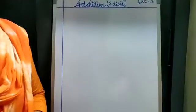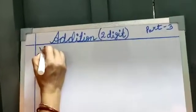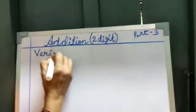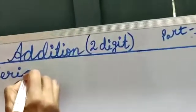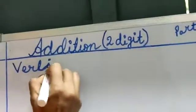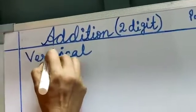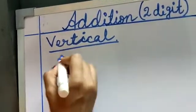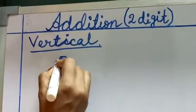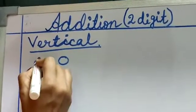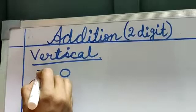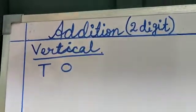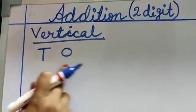So, let us start our chapter two digit addition. So, two digit addition, we will do vertically. Two digit, when we will write, first we will write 1s and 10s. We will write the place values.